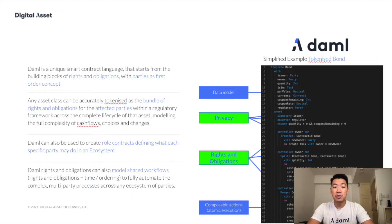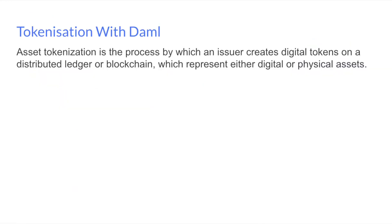DAML can also be used to create role contracts which define what each specific party may do in an ecosystem. Asset tokenization is a process by which an issuer creates a digital token on a distributed ledger or blockchain representing a digital or physical asset — though it doesn't have to be on a blockchain; it can also be done on a centralized database.